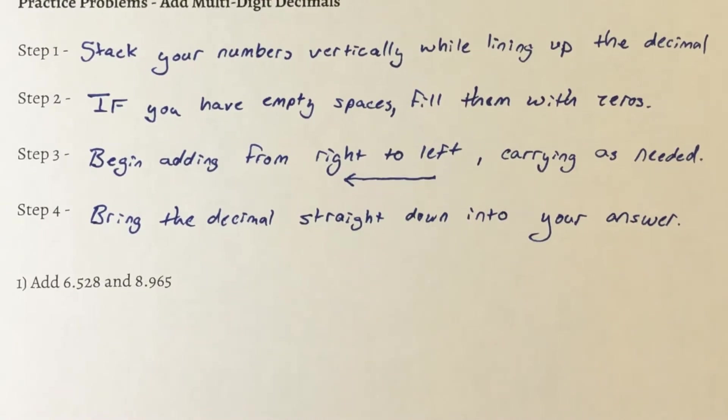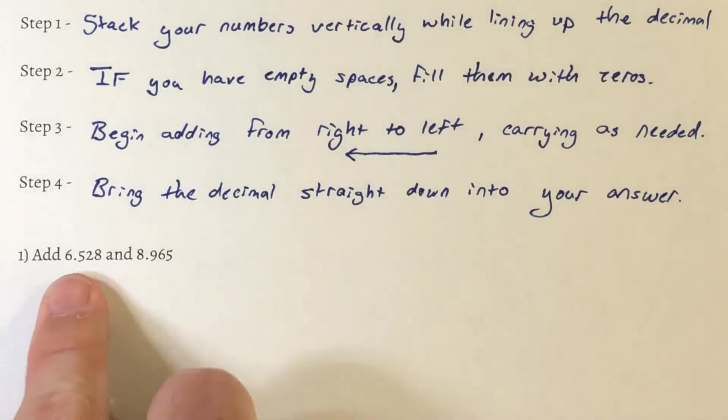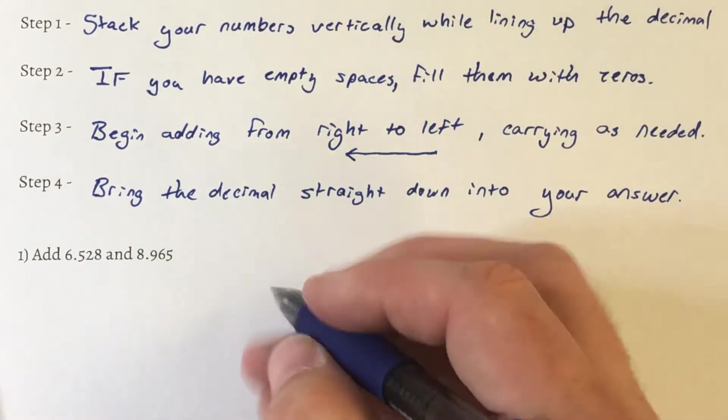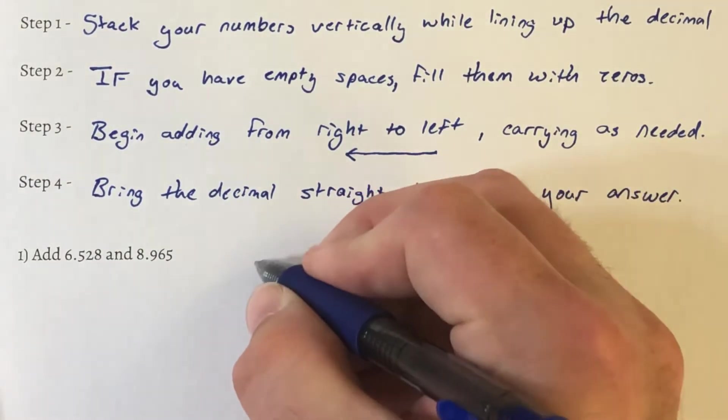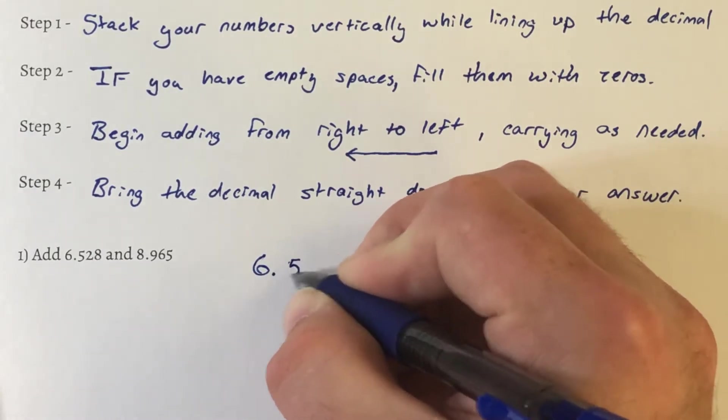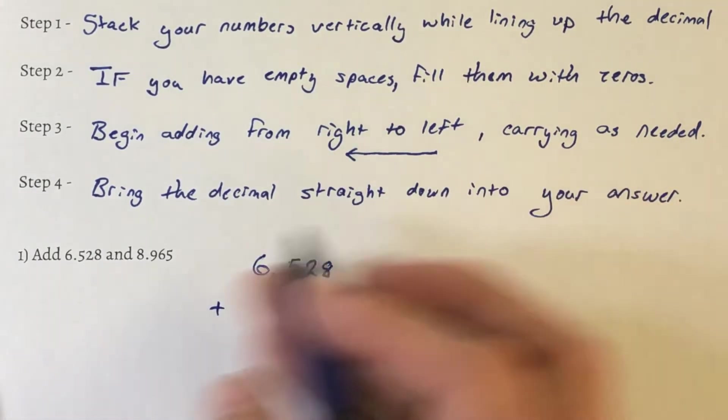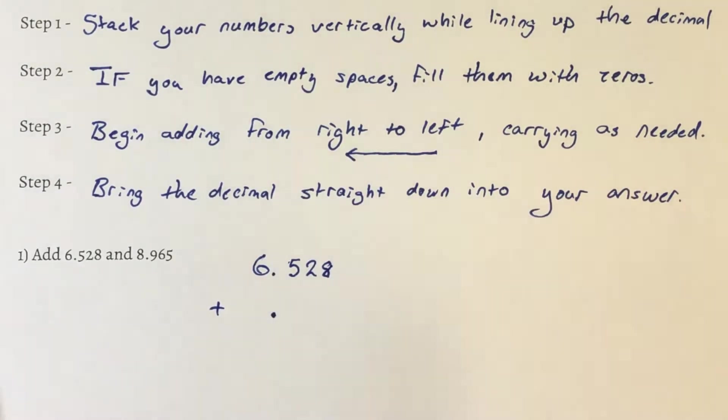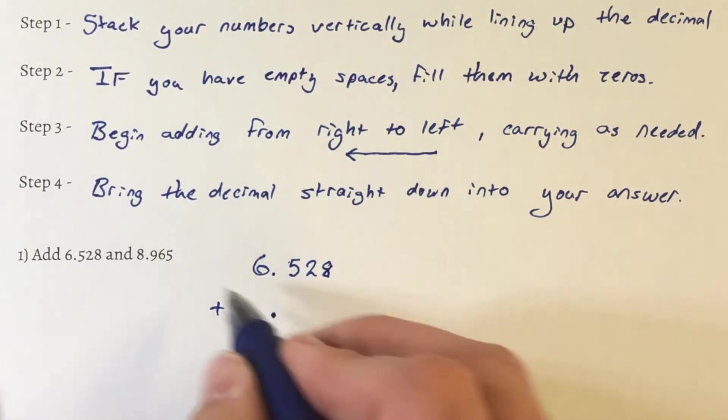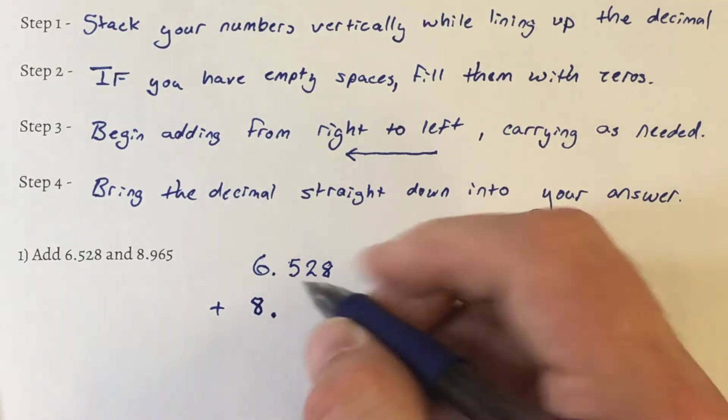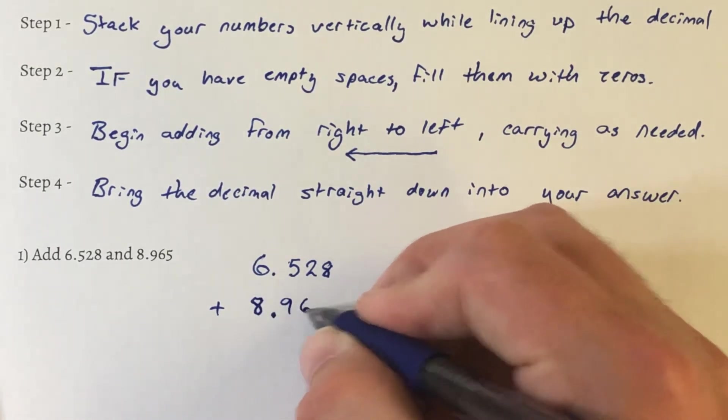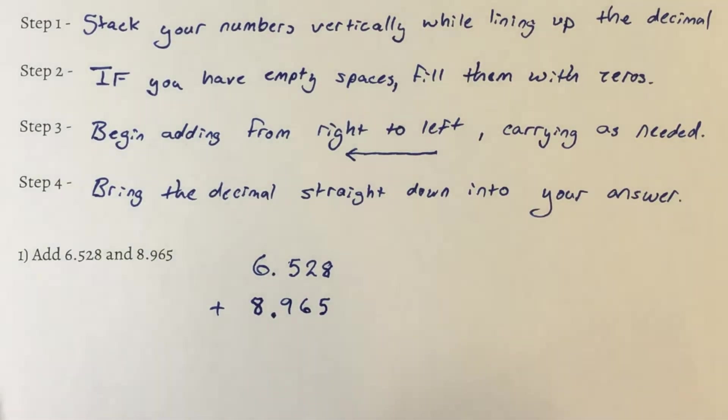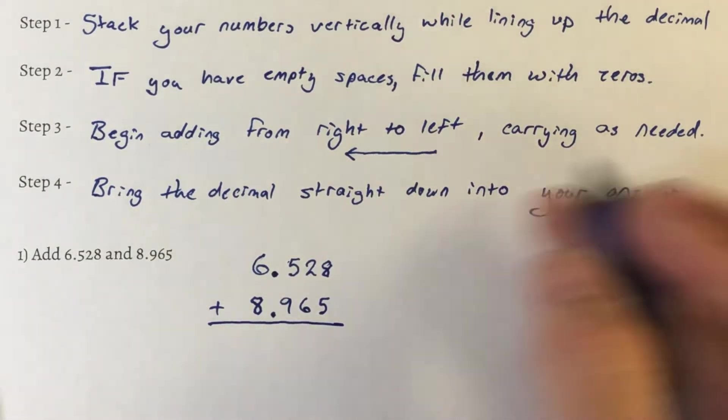So let's do an example problem. It says add 6.528 and 8.965. So our first step is to stack them on top of each other. We're going to write 6.528 plus 8.965. I'm going to make sure I line up the decimal first. That means the 8 is going to go under the 6, and then the 9 will go under the 5, 6 under the 2, and the 5 under the 8. So while I'm stacking them, I'm making sure that that decimal lines up.